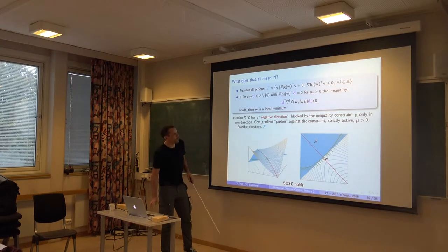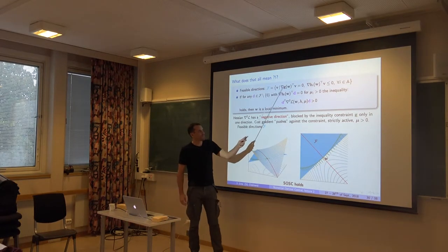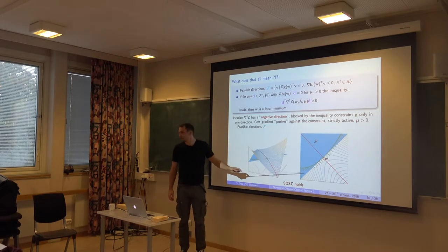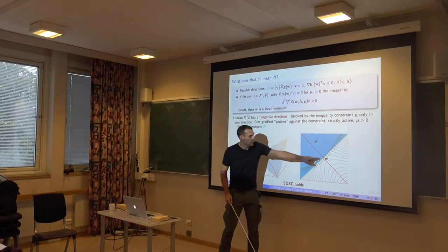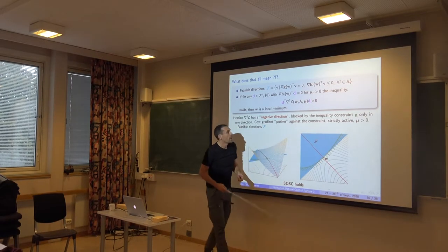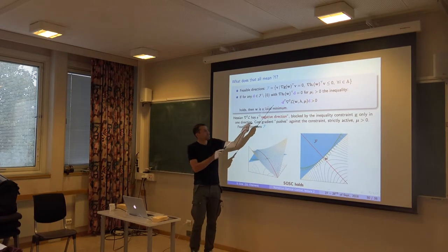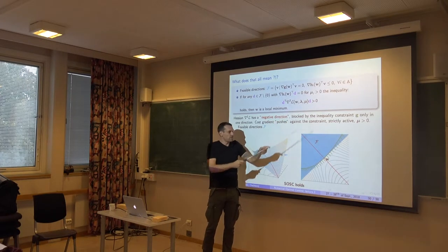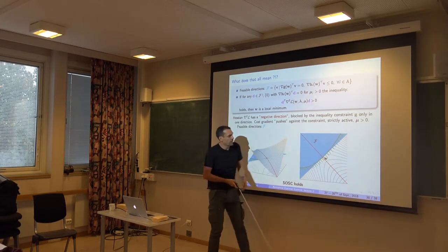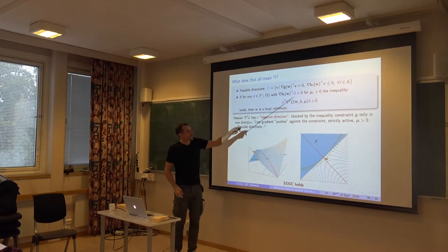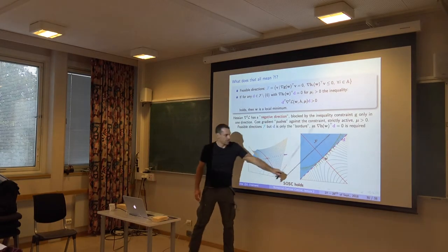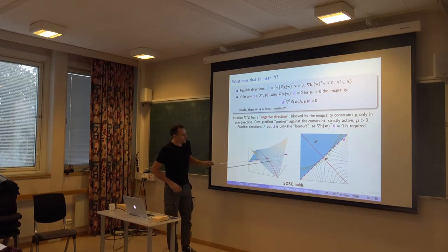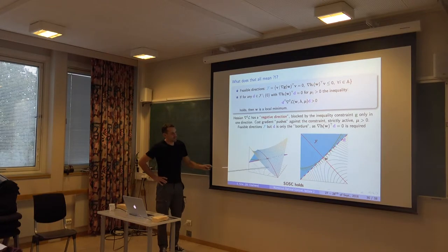So again, if you just look at the admissible directions, then you're talking about this entire thing here. We agree with that because you're allowed to move away from the constraint in principle. But in this SOSC definition, if you have a strictly active constraint, so the mu is non-zero, that's the case here because we are pushing against, then you restrict your d's to only this line here, as if it was an equality constraint, essentially.